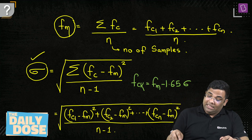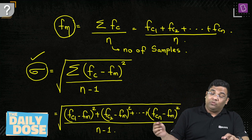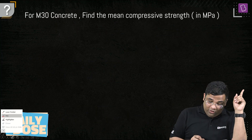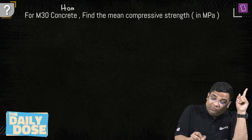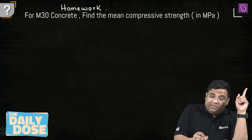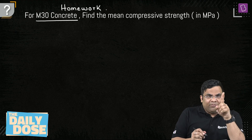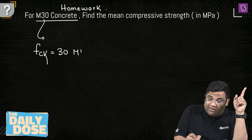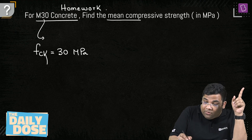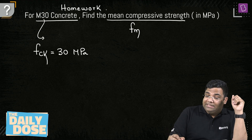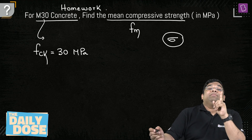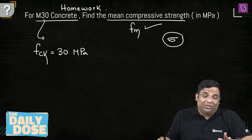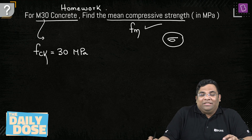For homework: M30 grade concrete is given — meaning FCK is known. Find the mean compressive strength FM. Look up σ from the standard table and apply the formula. Please write your answer in the comment section. Thank you very much — see you in another video.